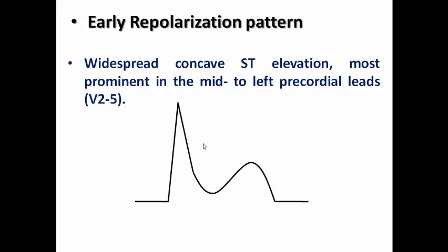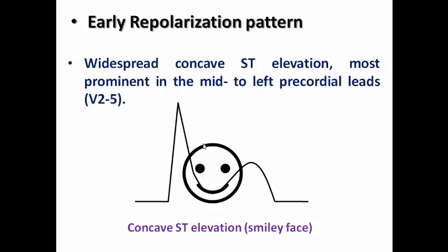Let's now see the criteria for early repolarization pattern. The first criterion is widespread concave ST elevation, most prominent in the chest leads, although it sometimes may appear in inferior or lateral leads. The ST segment has a concave morphology — the same appearance as a smiling face. This is characteristic of early repolarization as well as pericarditis, and may help differentiate it from STEMI, though some patients with STEMI may also show concave ST elevation.